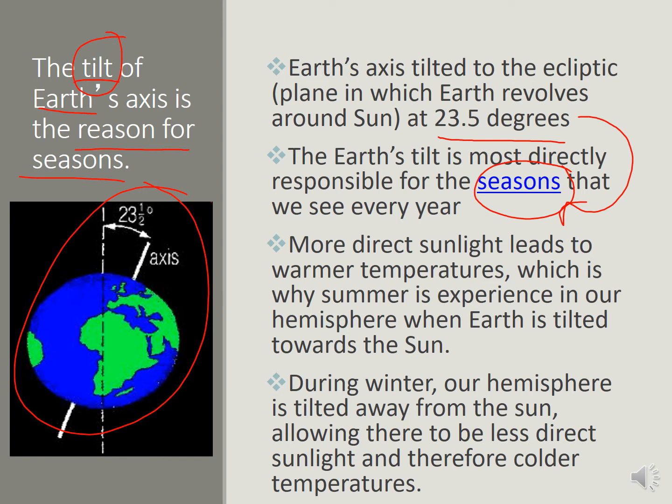During the winter, our hemisphere is tilted away from the sun. So that means we're going to be colder because we're not closer to the sun.